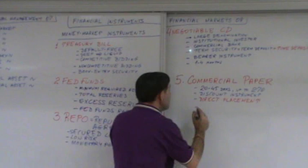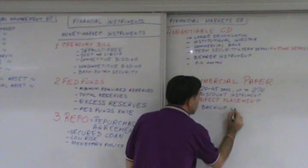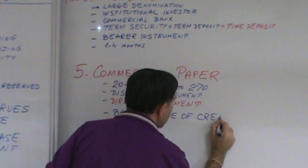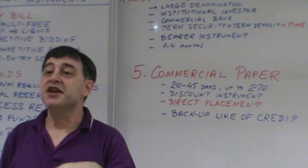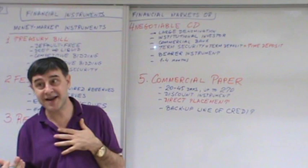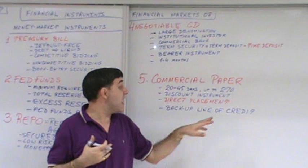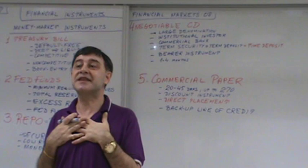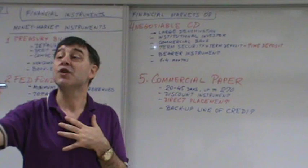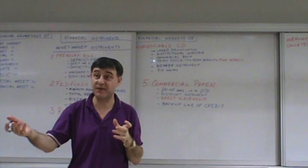Another key characteristic very common for commercial paper is a backup line of credit. A line of credit is an arrangement between a lender — usually a commercial bank — and a borrower to make a loan when the borrower needs it. A line of credit is not a loan; it is a promise and guarantee by the bank to make a loan when you want it and need it, at a specified interest rate and for specified terms.